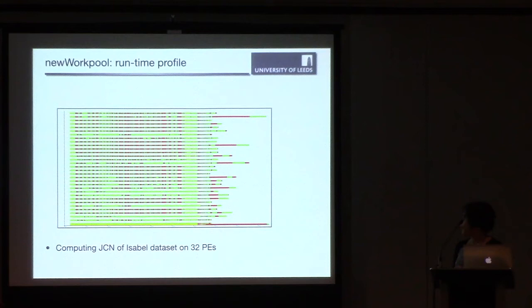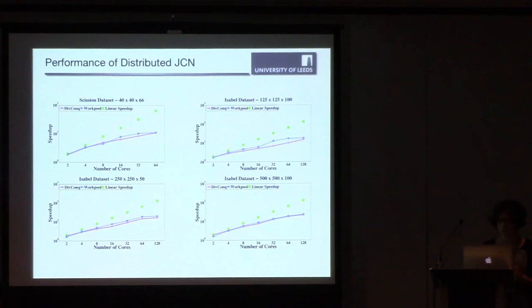Here is the runtime profile of running, computing JCN for Hurricane Isabel data sets. And as you can see, some of the PEs take much longer to compute while the other ones are doing lots of smaller tasks. We did our experiments on two different data sets: CJN data set, and three different resolutions of Isabel data set. The pink line shows divide and conquer performance, and the blue line is our work pool skeleton performance. So in all cases, we got better performance using our skeleton because it utilizes all PEs much better than divide and conquer.